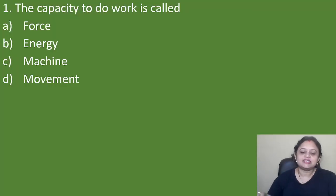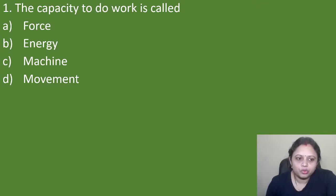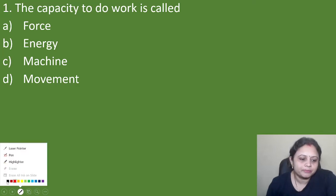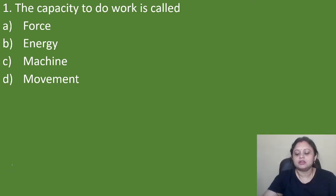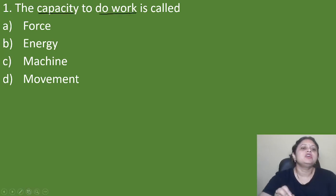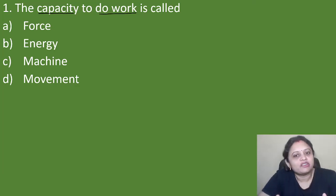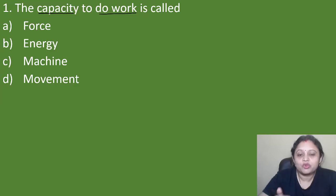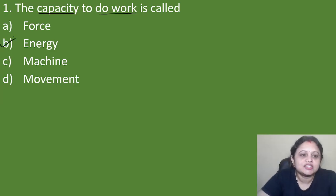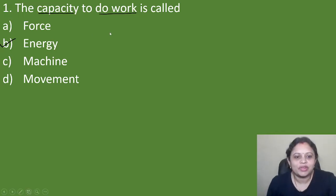Our first question: the capacity to do work is called — option A: force, B: energy, C: machine, D: movement. The capacity to do work — do you know the answer? You can write in the comment section. The capacity to do work, we call it as energy. So the correct answer is option B, that is energy.